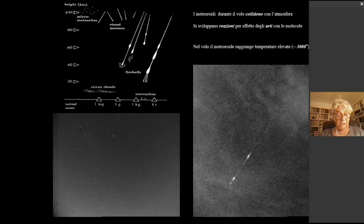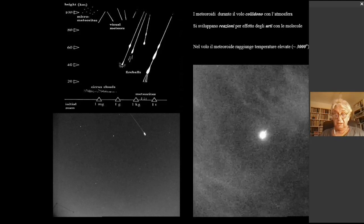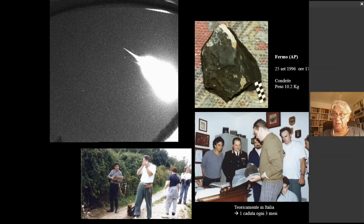Questo è il caso delle Perseidi perché le particelle cometarie sono poco dense. Se il meteoroide riesce a penetrare negli strati più densi dell'atmosfera, decelera con frammentazioni, con esplosioni e in taluni casi può anche raggiungere il suolo, avendo una densità molto più grande di quella dei corpuscoli cometari. Qui abbiamo per esempio un bolide molto grosso fotografato dalla nostra rete, e qui è un sopralluogo che abbiamo fatto quando è caduta l'ultima meteorite nelle Marche.